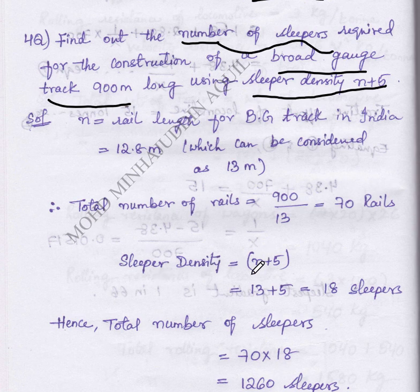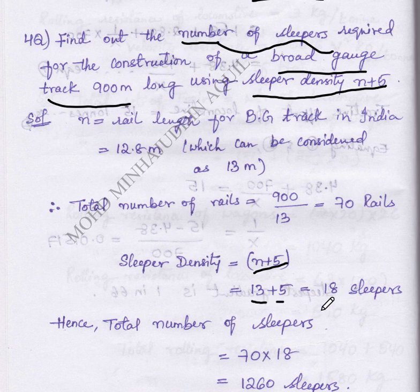Therefore sleeper density can be calculated by the formula n plus 5. Therefore we have 13 meters plus 5 equals 18 sleepers.